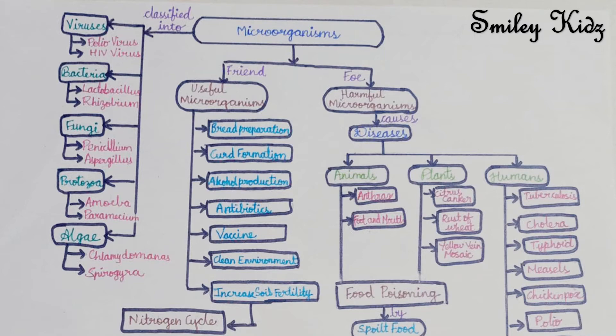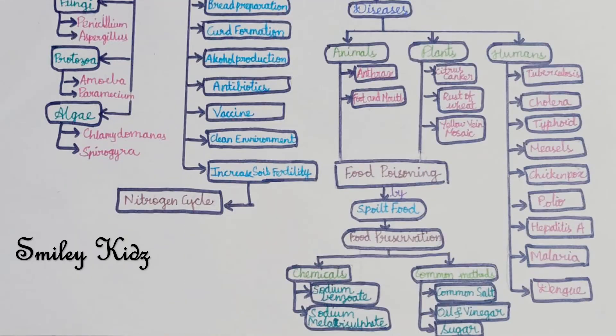Human diseases: some common human diseases are also caused by microorganisms. At first we have tuberculosis, cholera, and typhoid. These three diseases are caused by bacteria. Next we have measles, chickenpox, polio, and hepatitis A. These four diseases are caused by viruses.